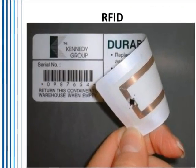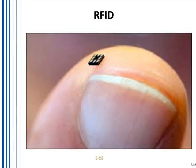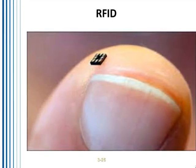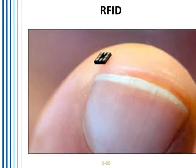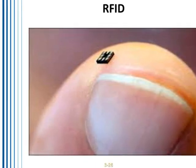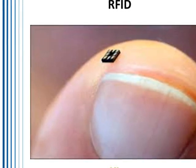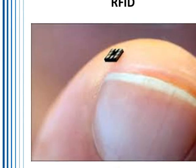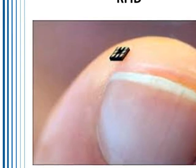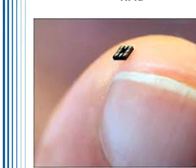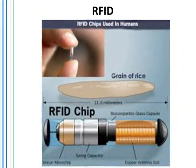RFID tagging doesn't necessarily need to be a separate device — it can be imprinted on the back of a label. These chips can be placed almost anywhere, which is the same technology used to microchip domestic pets so that if your dog or cat gets lost, the pound or vet can identify you as the owner. This raises the question: could this technology be implanted in humans?